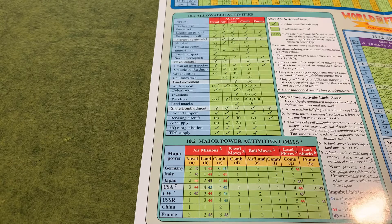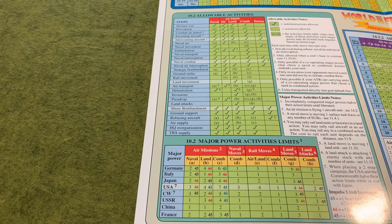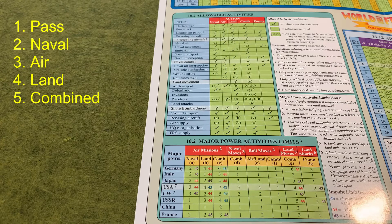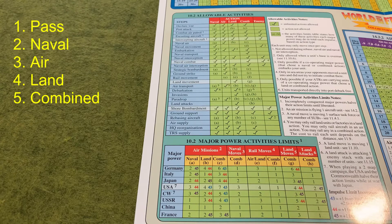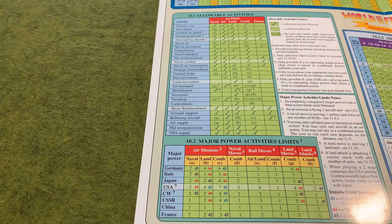There are five different types of actions to choose from: the pass action, naval action, air action, land action, and combined action. Let's talk about each of these in turn and figure out what you can and can't do.